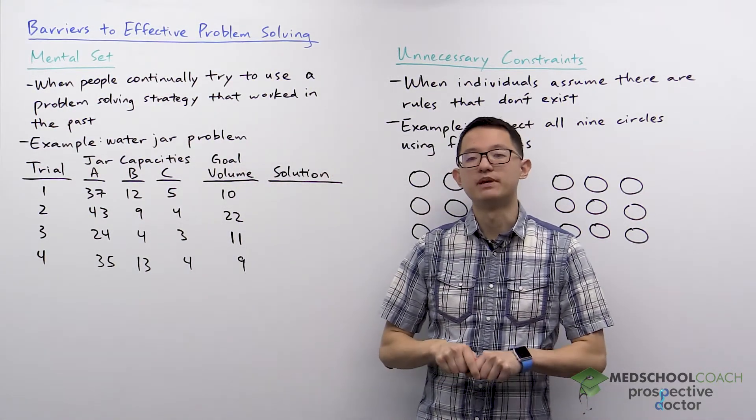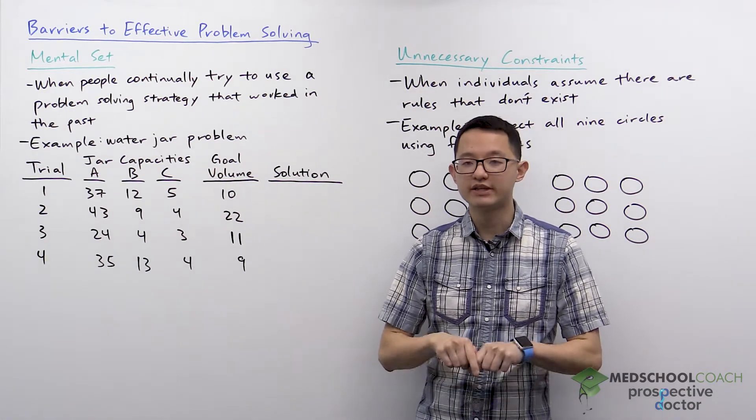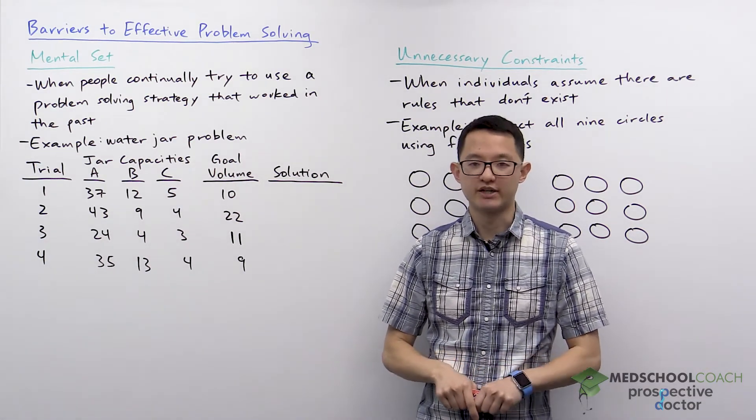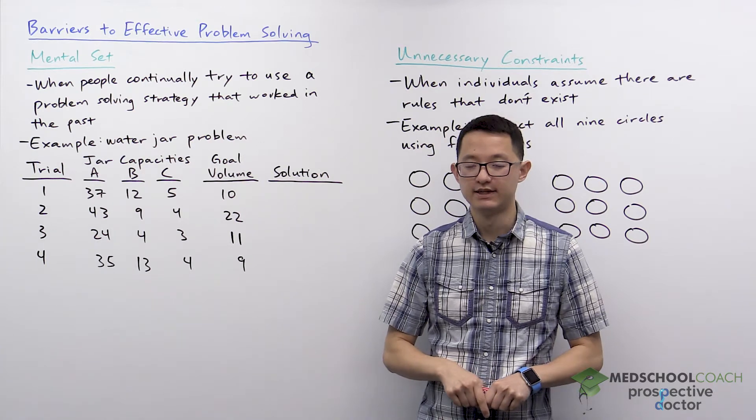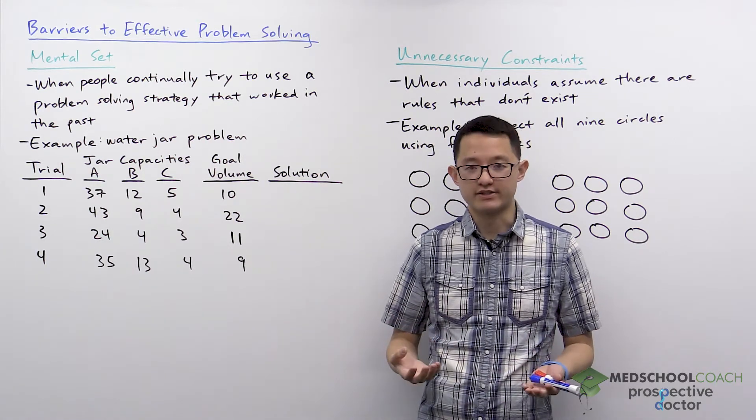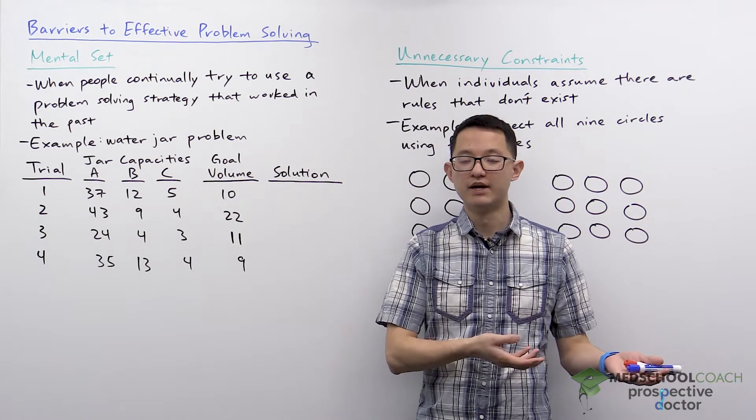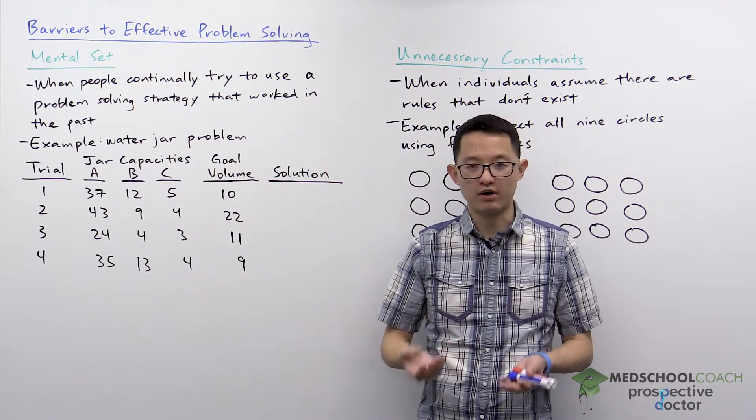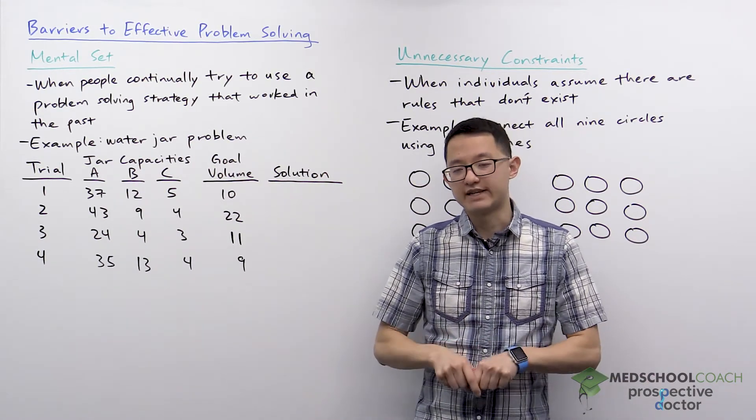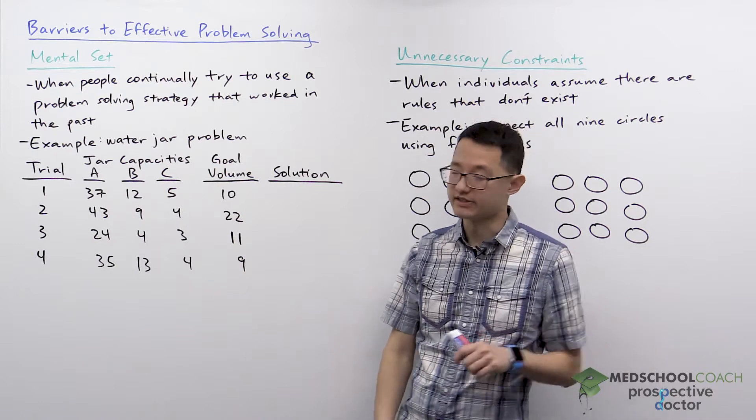Mental set is when people try to continually use a problem-solving strategy that worked in the past. The reasoning is usually along the lines of, well this solution worked for this problem, so why won't it work for other problems? To better understand how this works, let's take a look at an example.